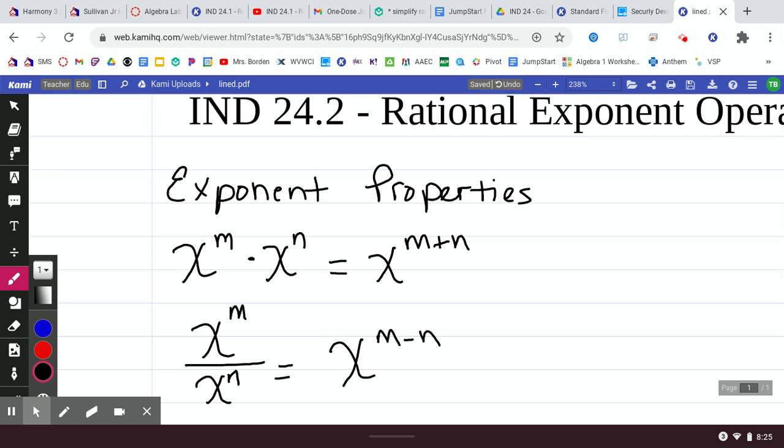And then lastly, we had x to the m raised to the n. We called this a power to a power. What did we do with the two exponents? Multiplied them. m times n. That all should be review. We did that before.